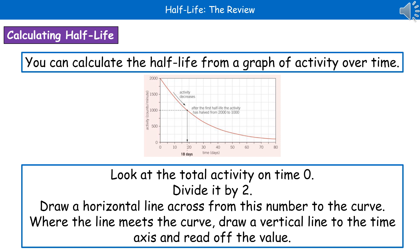One of the things they could ask you to do on your exam is to calculate the half-life. One way they could do this is to give you a graph that shows you the activity over time. In order to calculate the half-life from a graph, first of all, look at time 0 and look at the activity. Divide that number by 2 and then draw a horizontal line across using your ruler from that number to the curve, and then take that down to your x-axis.